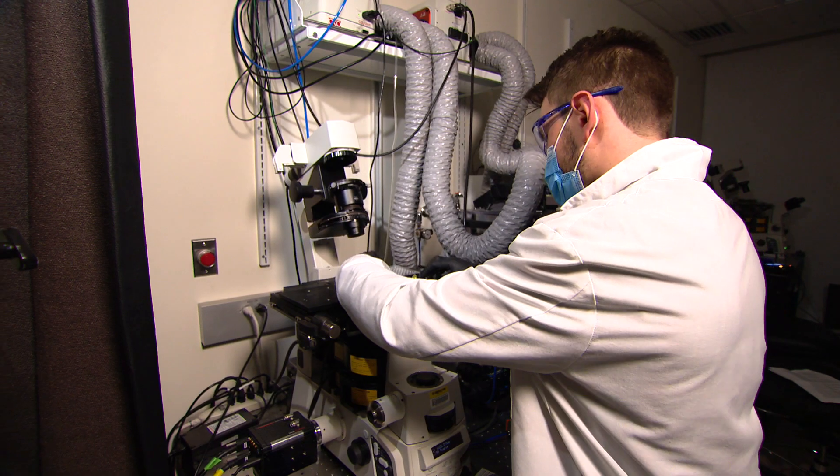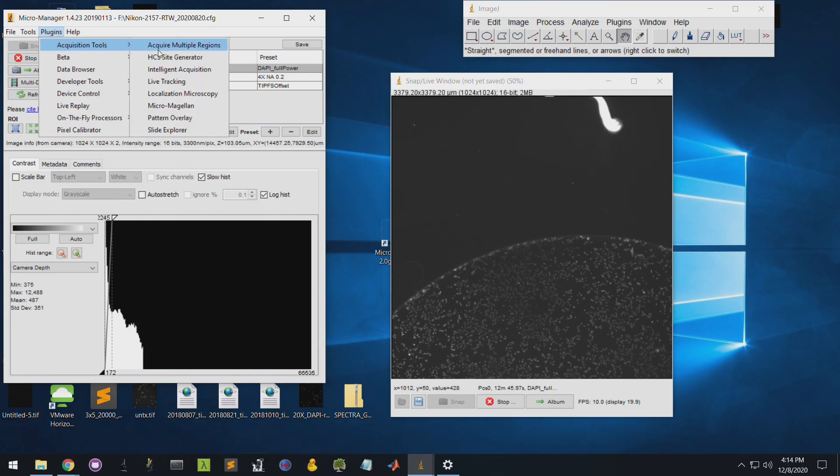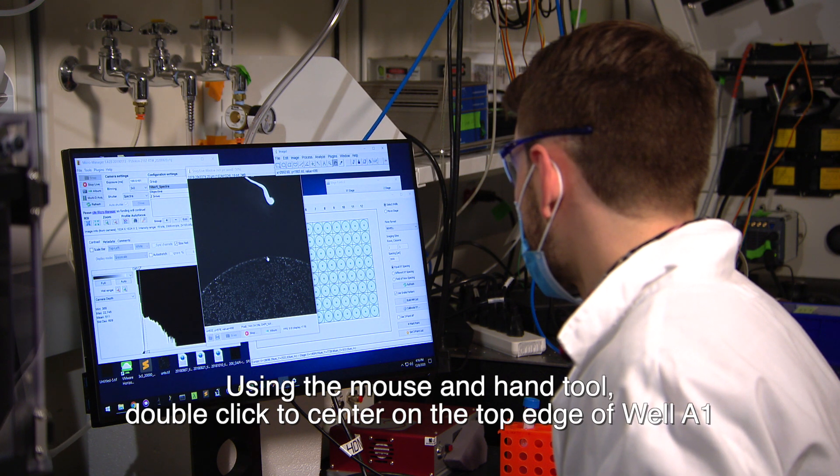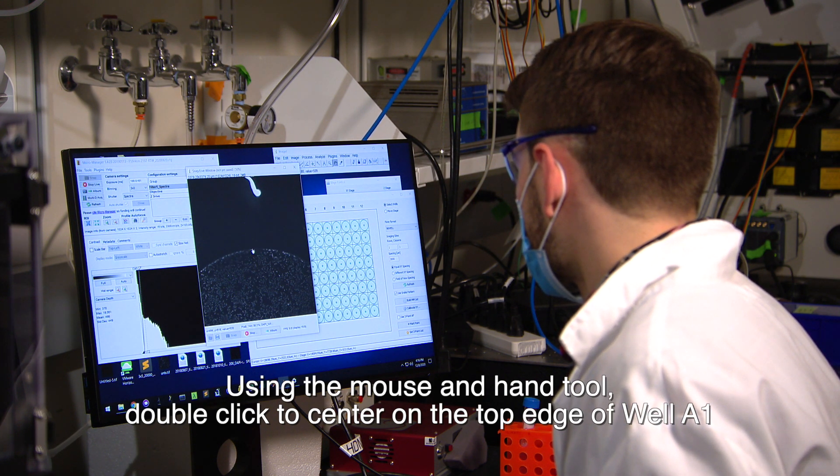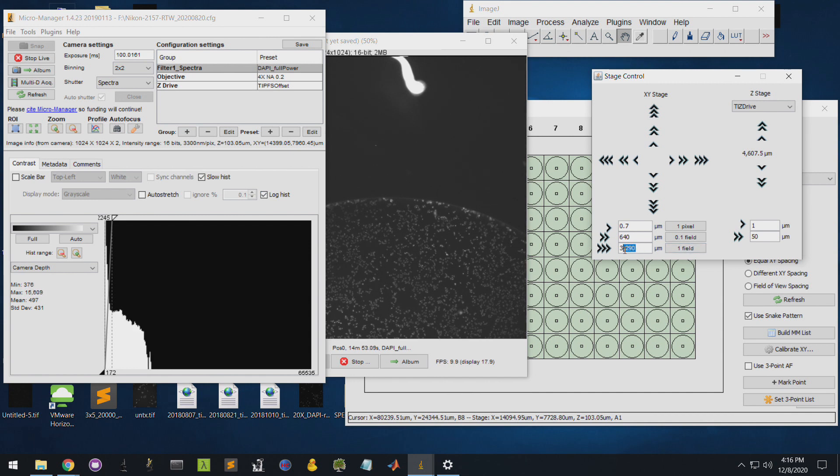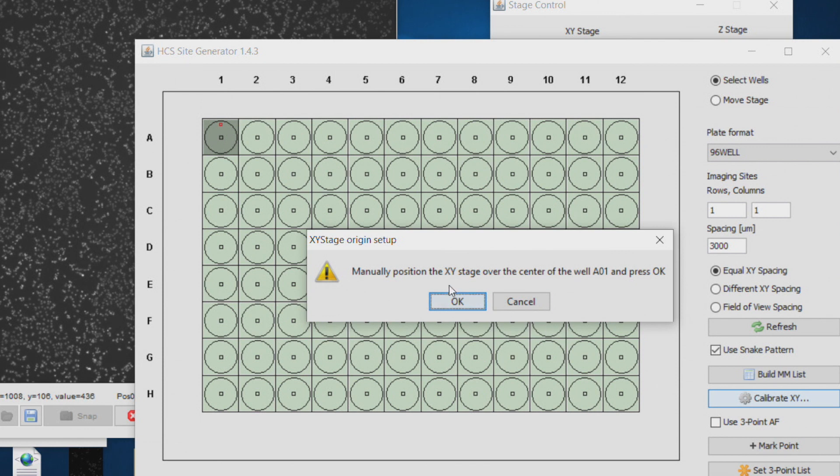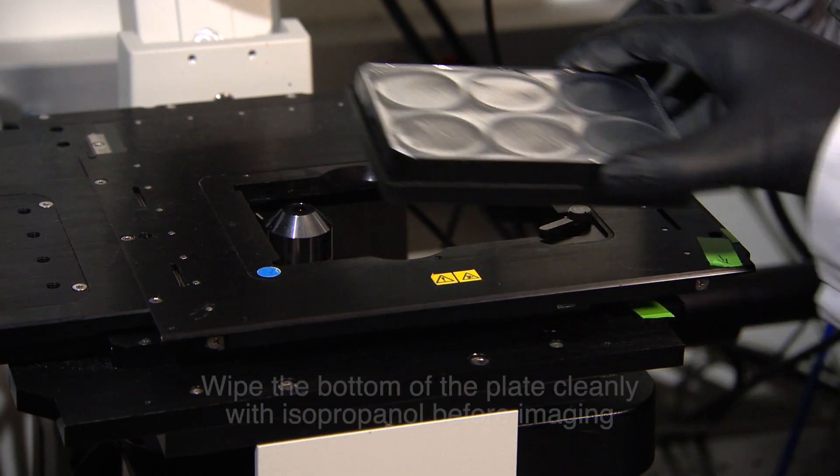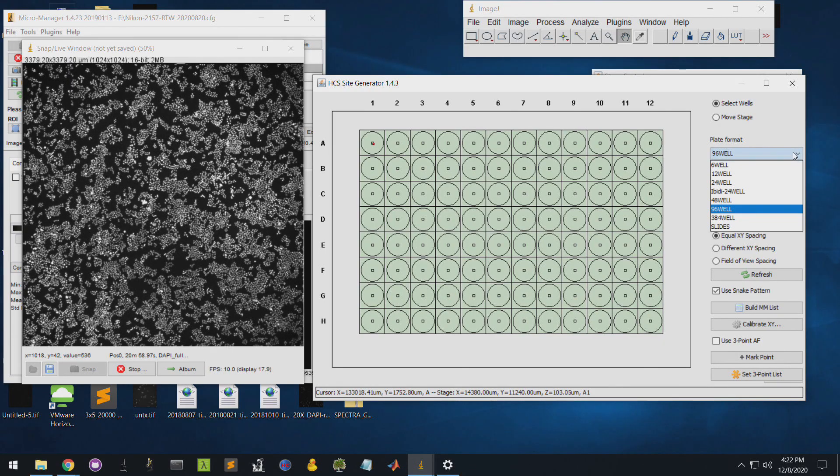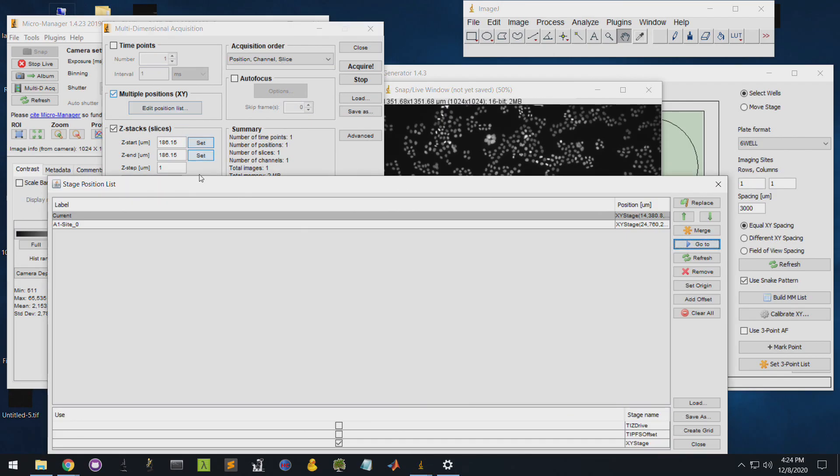For the Nikon TiE, first place a reference 96-well plate of DAPI-labeled cells onto the microscope stage to perform stage alignment. Next, load the HCS site generator plugin. Use the mouse move stage feature and hand tool to move the top edge into the center. Next, jog the stage to the center of the well using the stage control tool and known plate well diameter. Store the plate alignment using the Calibrate XY button in the HCS site generator.